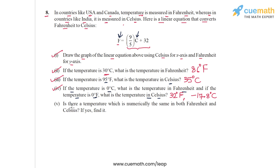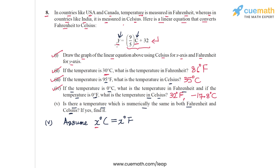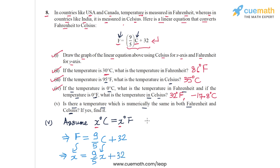Part 5 asks: is there a temperature that is numerically the same in both Fahrenheit and Celsius? We assume such a temperature exists and call it x degrees, where x°C = x°F. Substituting both C and F as x into the equation F = 9/5 × C + 32, we get x = 9/5 × x + 32.